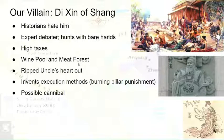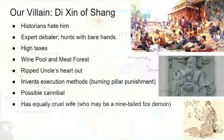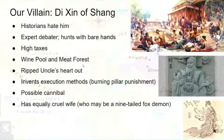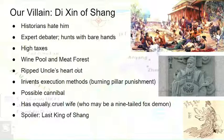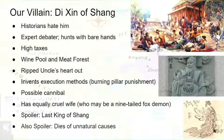Di Xin was also a possible cannibal, though this was something possibly invented by later historians. He also had an equally cruel wife who may be a nine-tailed fox demon — you can see the picture toward the bottom right, showing the Queen of Shang who apparently has nine tails. That's actually the beginning of the nine-tailed fox demon from Japanese mythology as well. Here's a spoiler: Di Xin is the last king of Shang, and he dies of unnatural causes — you'll learn exactly how soon enough.